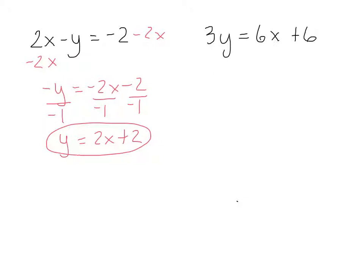Now, on this right equation, you can see that they've already got y almost by itself. The only thing I've got to do is divide everything by 3. And when I do that, I get y equals 2x plus 2.